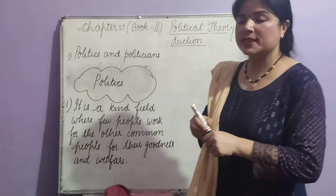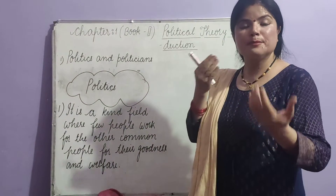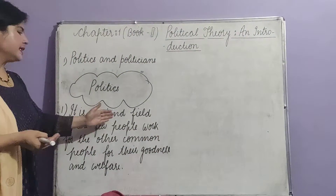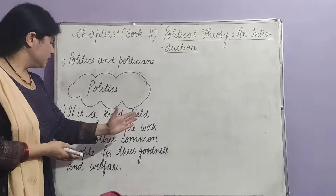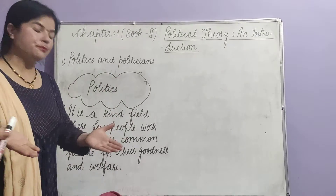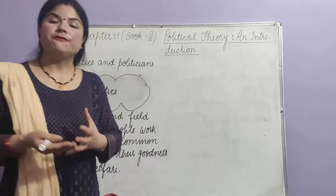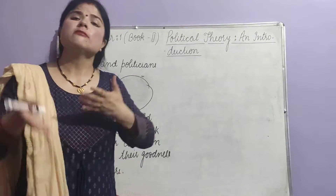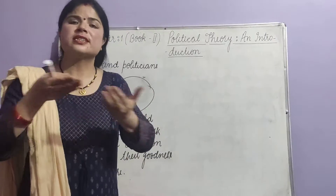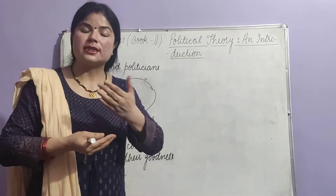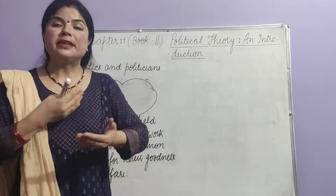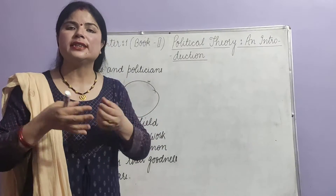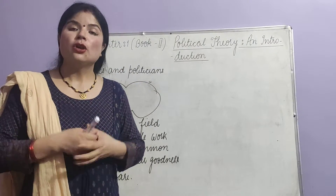So students, this is the easiest and simplest definition of the political field, or politics. It is a kind of field where few people work for the other common people of the country for their goodness and welfare. This field is called politics — with the help of rules, regulations, framing different laws and policies or schemes, so that common people can enjoy their life equally and freely.